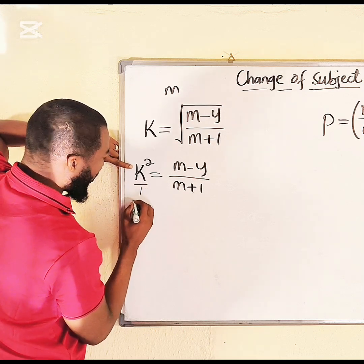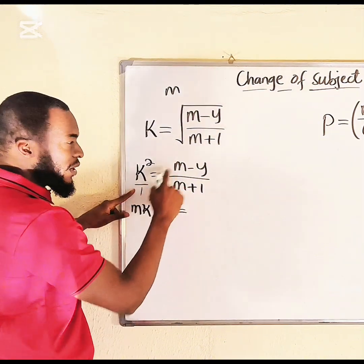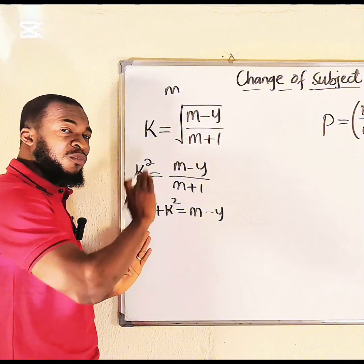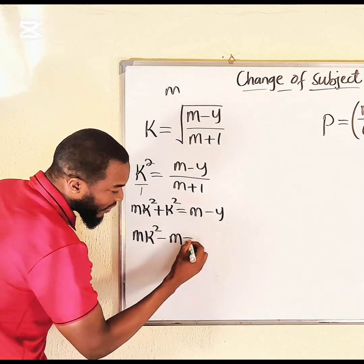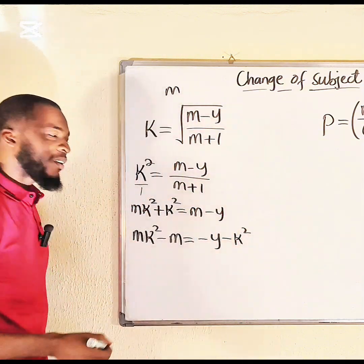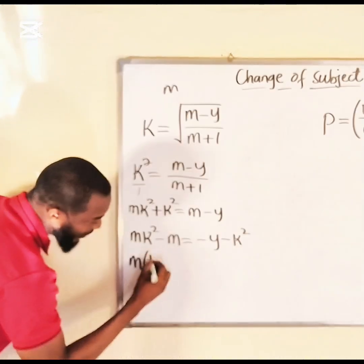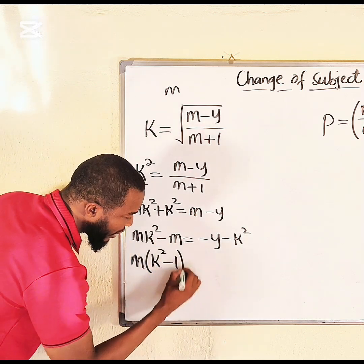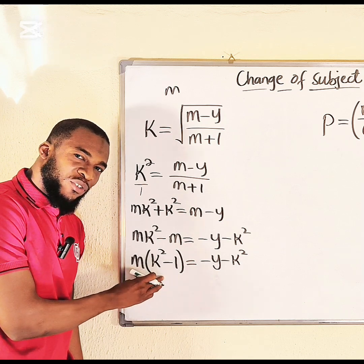Expanding the cross multiplication: k²·m + k² = m − y. Bring all terms with m to the left and terms without m to the right: mk² − m = −y − k². We now have two terms with m on the left-hand side.